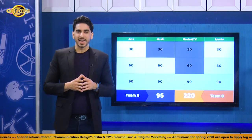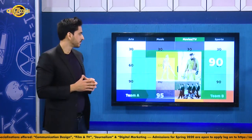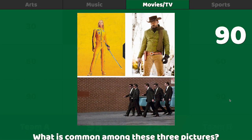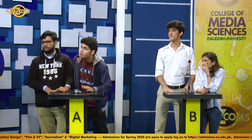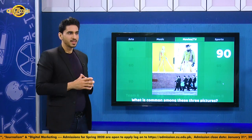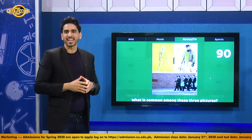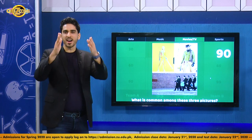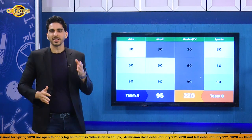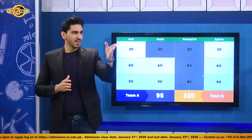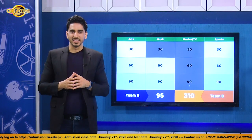Team B chooses movies for 90 again. The question: what is common among these three pictures? Team B buzzes first and answers that all three movies are directed by Quentin Tarantino. The host asks if they're sure — absolutely, says the contestant. 100% confidence and 100% correct. Team B cements their lead. Very well done and well deserved.